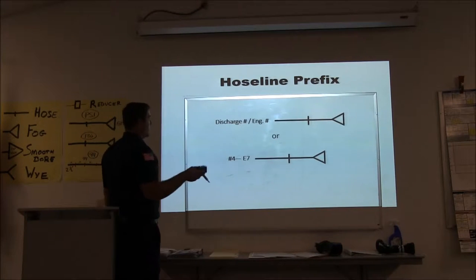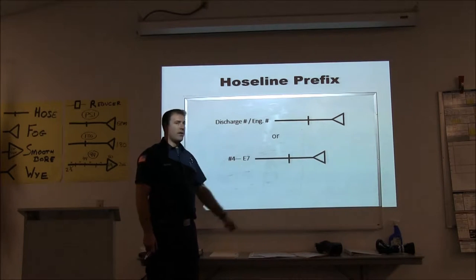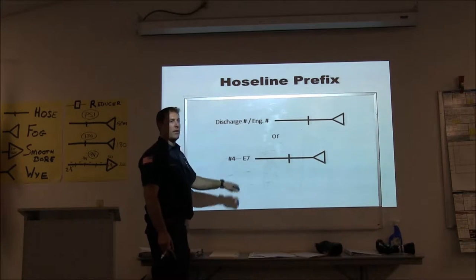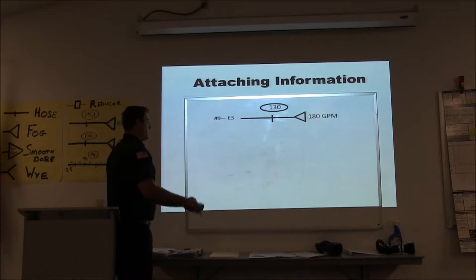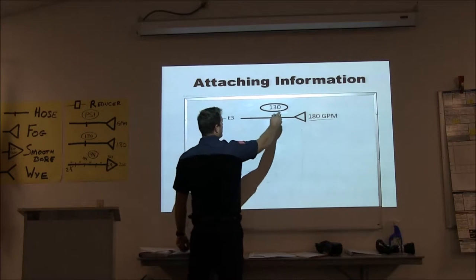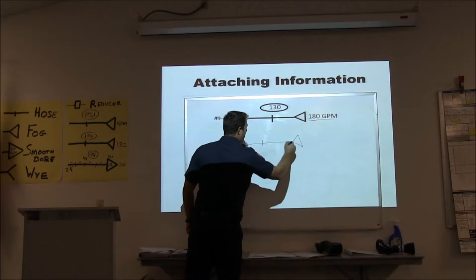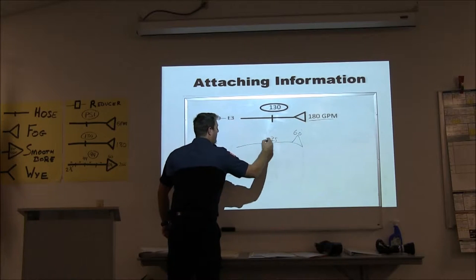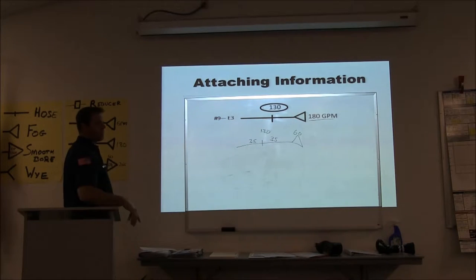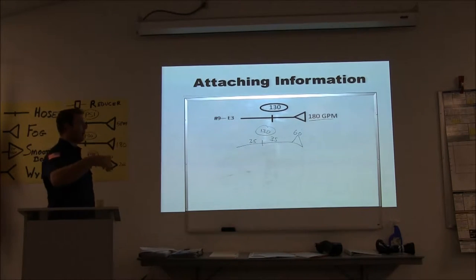We use a hose line prefix to keep track of our discharge number and engine number. If I've got discharge four and engine seven, engine seven isn't going to say 'increase pressure on discharge four' — they'll say 'engine seven needs more pressure.' We put our GPM at the end of the hose line and our discharge pressure from the chart at the top, circled. Circling it makes it super easy to recognize quickly when you have multiple lines.